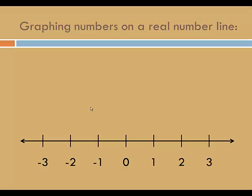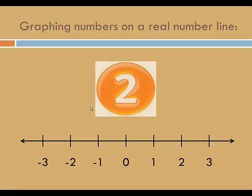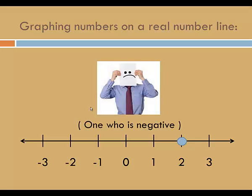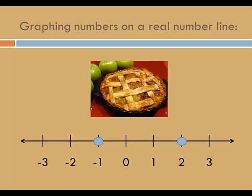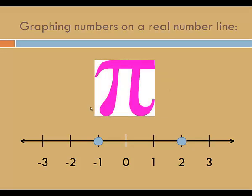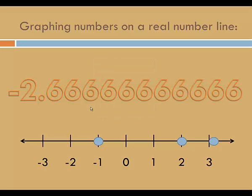Now we should be able to find any real number on this number line. For example, the number 2. Well, that's right there. What about negative 1? Sure, we can find that too. It's over here. What about pi? Not that pi, but this pi. That's approximately 3.14, and that would belong over here. And lastly, negative 2.6666 that goes on and on forever. I'm just going to put that over here somewhere between negative 2 and negative 3. So that's how we graph numbers on the real number line.